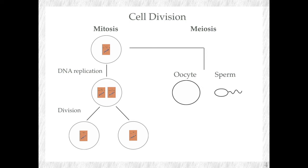There is a more specialized form of cell division as well, which we know as meiosis, where the goal is to create germ cells. Germ cells are the female oocyte or male sperm. These can fuse, create a new organism that then re-enters the mitotic cell cycle, starts dividing, and starts creating a multicellular organism.